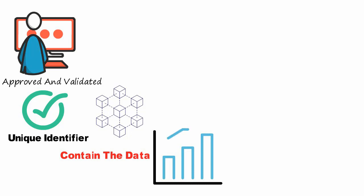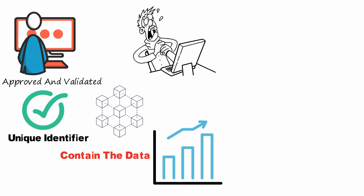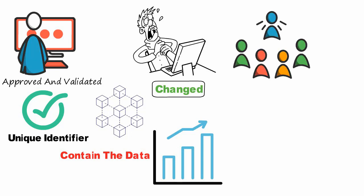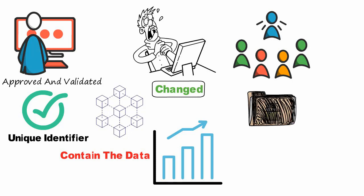Each block also contains the data of the previous block, so as the number of blocks continues to increase, they will increase the overall strength of the network. If anyone wants to change the hash of a single block, it would require the whole blockchain to be changed, making it highly improbable for the blockchain to be altered.